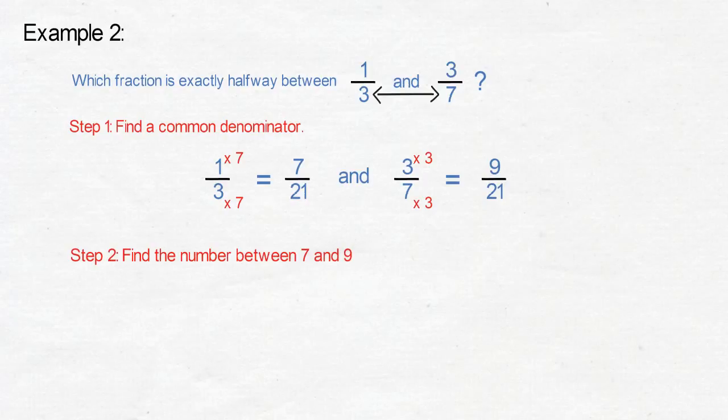7 and 9, which is 8. The fraction halfway between 1 third and 3 sevenths is 8 over 21.